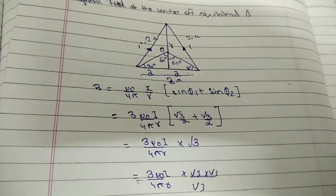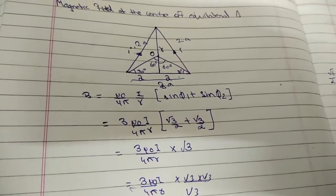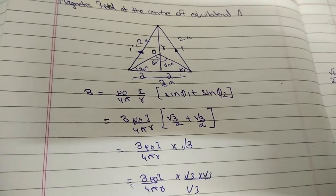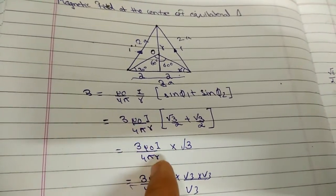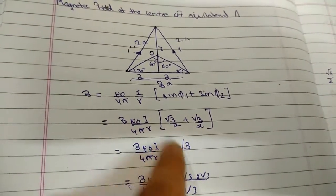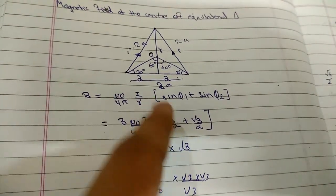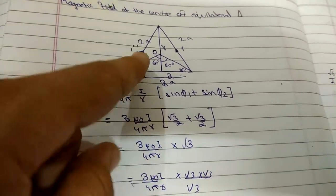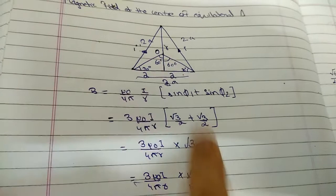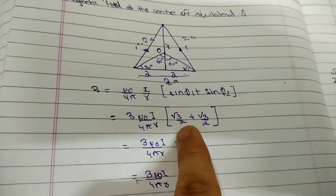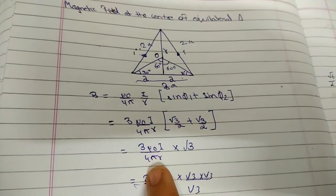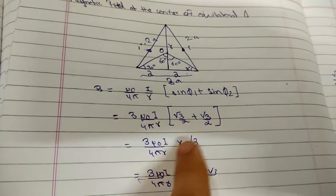In an equilateral triangle, three sides are present, so multiply by 3: 3μ₀i/4πr into [sin 60° + sin 60°]. The value of sin 60° is √3/2, so we get 3μ₀i/4πr into √3.